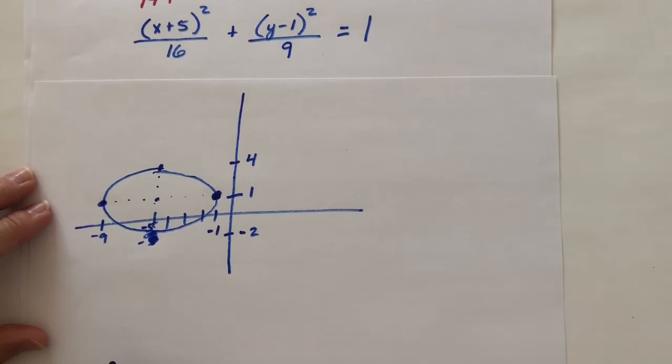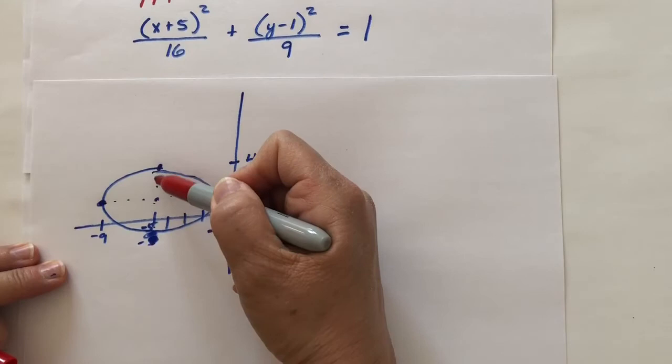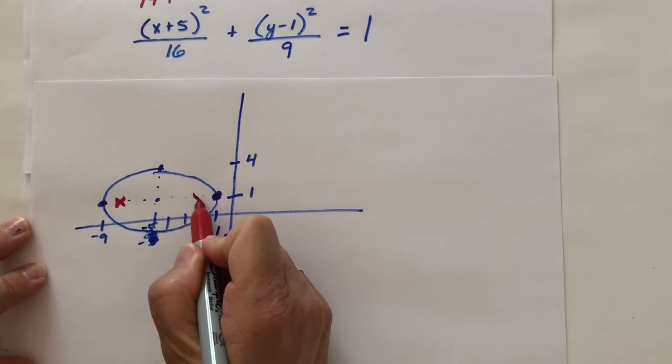Now, our foci are always on our major axis. Our major axis, remember, is this axis right here. Our minor axis is the smaller of the 2. So I know my foci are here and here somewhere. I just don't know how far from center they are.